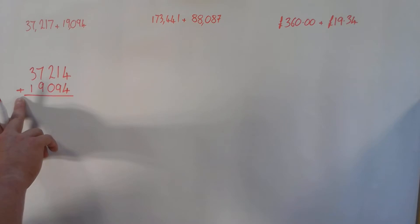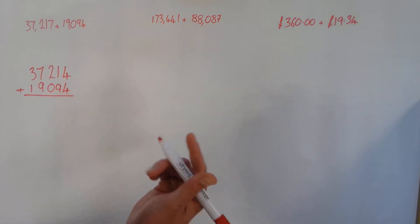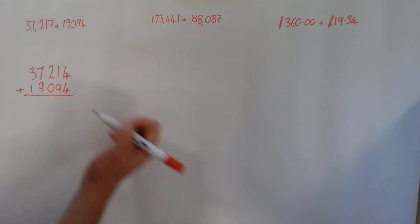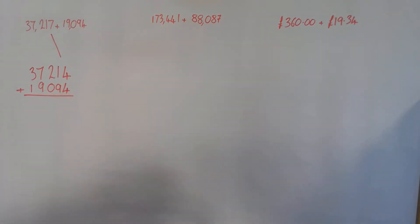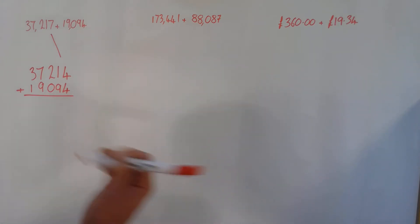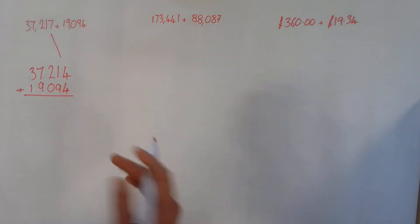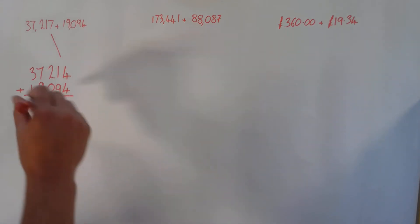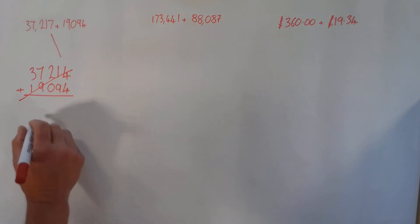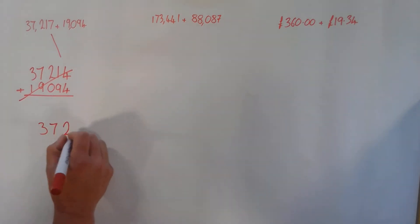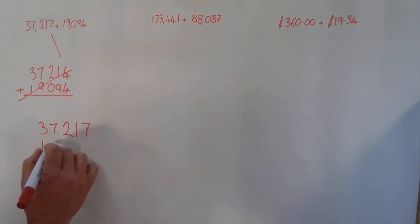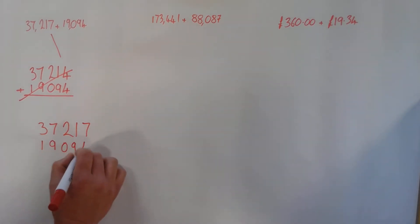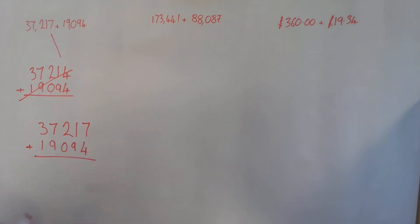Now that I'm recording this I've spotted an error — I made a mistake in transposing my number. I should have had 37,217 but I wrote 37,214 because I was concentrating on what I was going to say. So let's take two. 37,217 — that's better. I'm going to add to that 19,094. That's why it's always really important to double-check that the calculation you've been given is the calculation you're solving — as you can see, even we make mistakes with those.